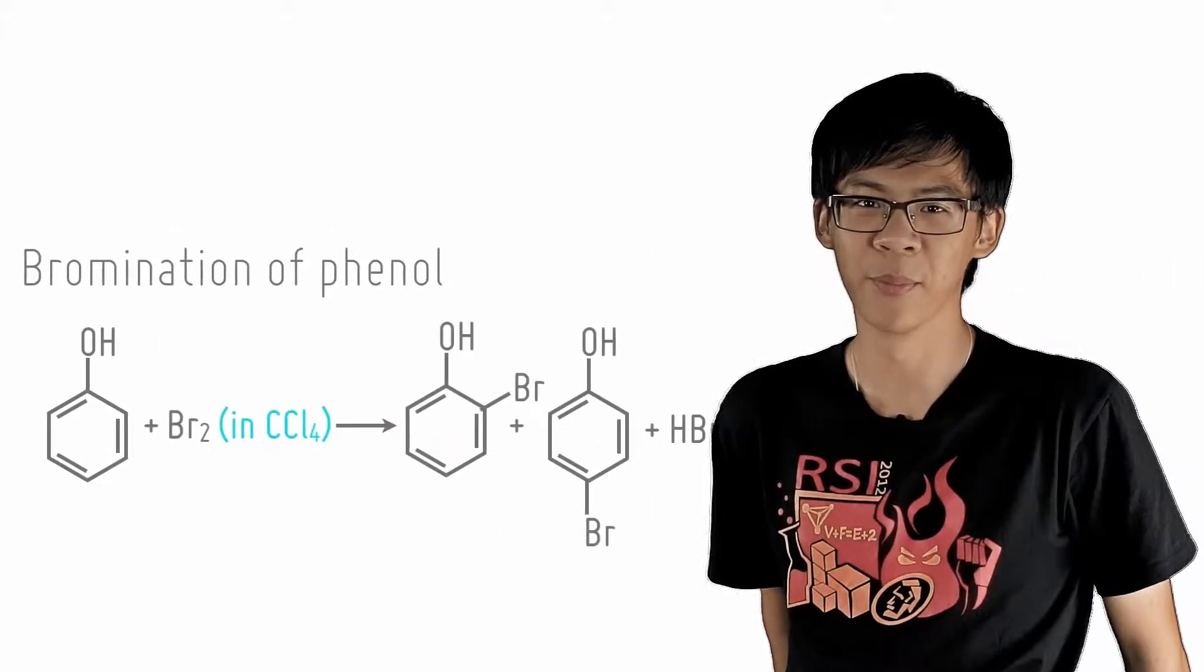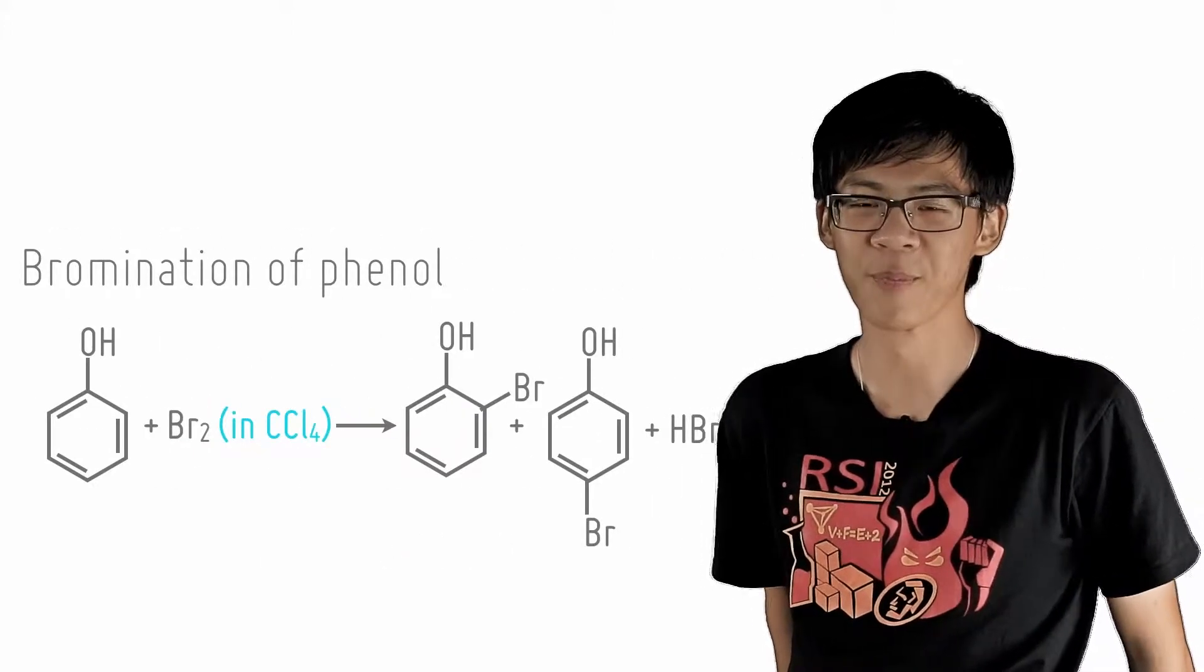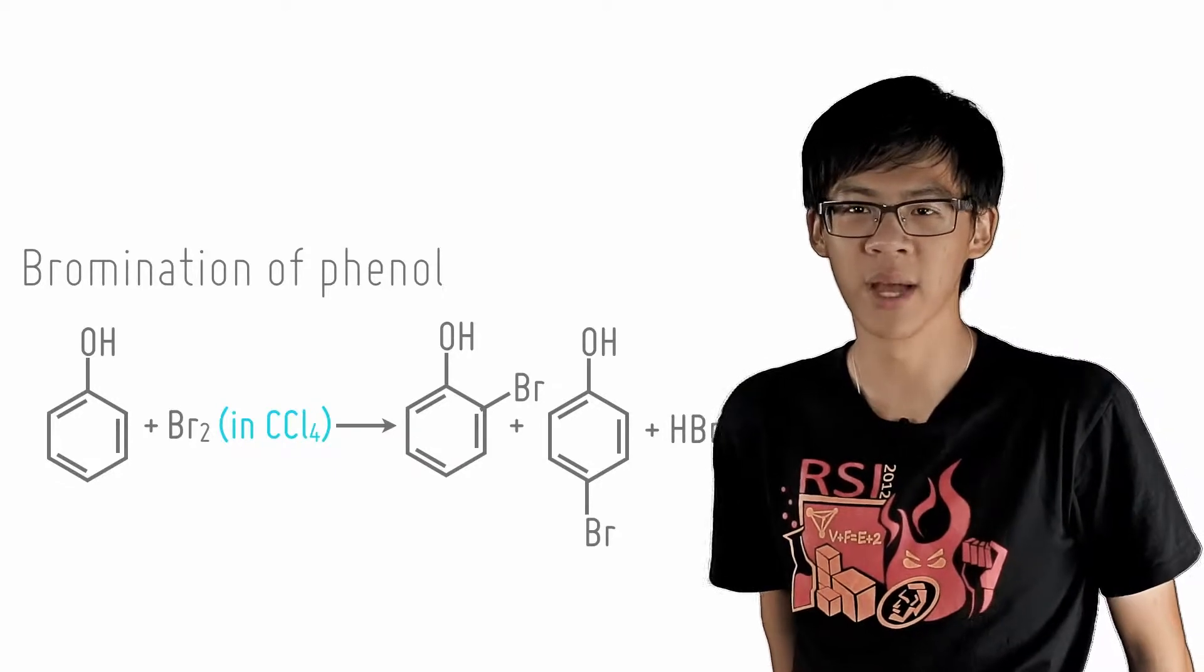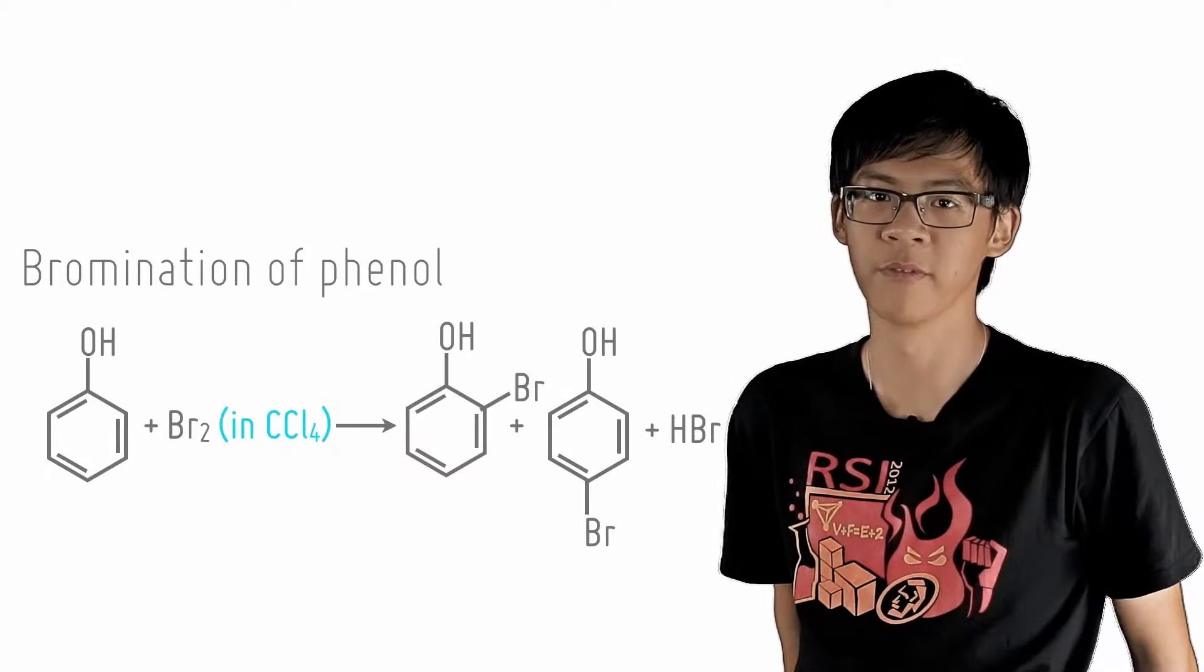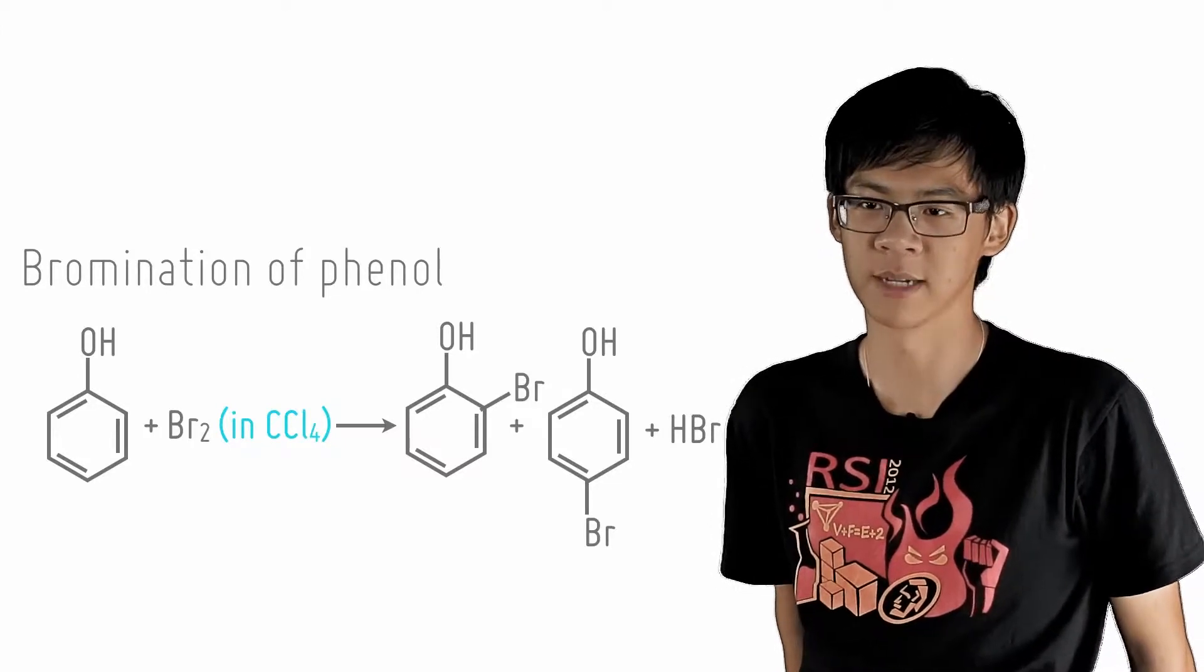However, there is a difference when we add bromine in the inert solvent CCl4. Reacting phenol with Br2 in CCl4 forms the monobrominated product 2-bromophenol or 4-bromophenol instead of the tri-substituted product.